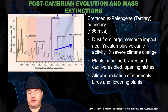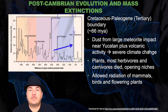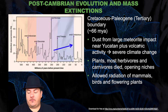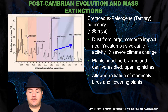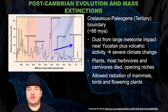The Cretaceous-Paleogene boundary was about 66 million years ago. Dust from a large meteorite impact near the Yucatan plus volcanic activity resulted in severe climate change. It caused about 75% of all species alive at that time to be killed off. Plants, most herbivores, and carnivores died, which opened new ecological niches, allowing the radiation of mammals, birds, and flowering plants. This is when the dinosaurs died off. When those species were killed off, it opened up new areas where other species could radiate and evolve to fill those ecological niches — that's where we got the large expansion in different mammals alive on this planet.